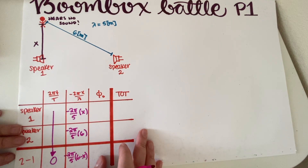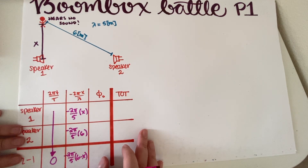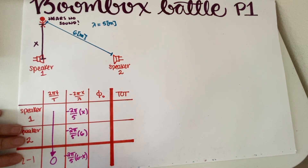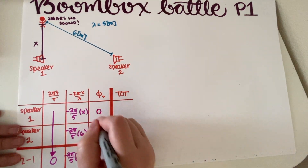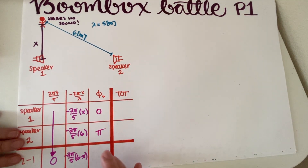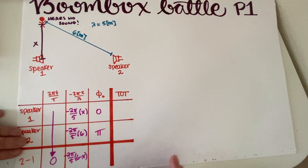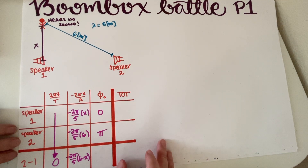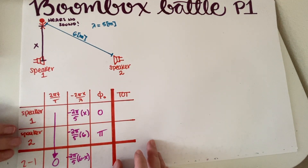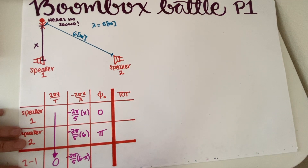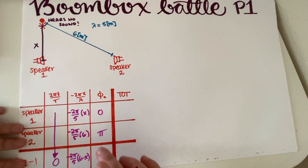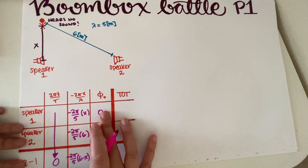Both of these speakers are wired oppositely, which — as you may have seen on the lecture — means there is a phase difference of pi between them. So we can say one has phase 0 and the other has phase pi, or vice versa, as long as the actual difference is an odd multiple of pi. Since I'm doing 2 minus 1, that phase difference term contributes pi.